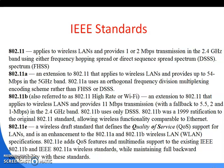802.11e is a wireless draft standard that defines Quality of Service (QoS) support for LANs and is an enhancement to the 802.11a and 802.11b wireless LAN specifications. 802.11e adds QoS features and multimedia support to the existing IEEE 802.11b and 802.11a wireless standards while maintaining full backward compatibility with these standards. These cover quality of service topics; the next class will discuss additional standards.